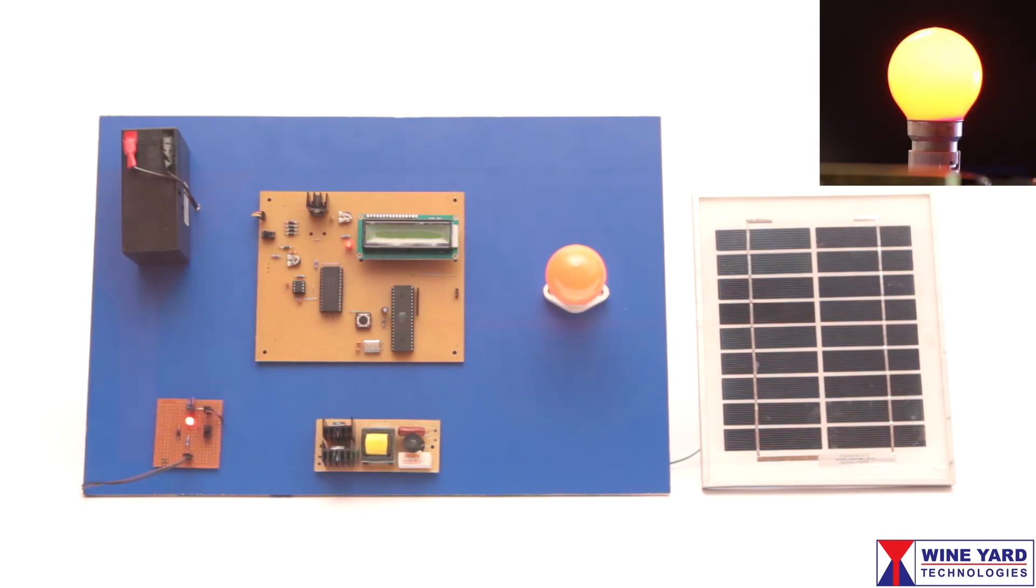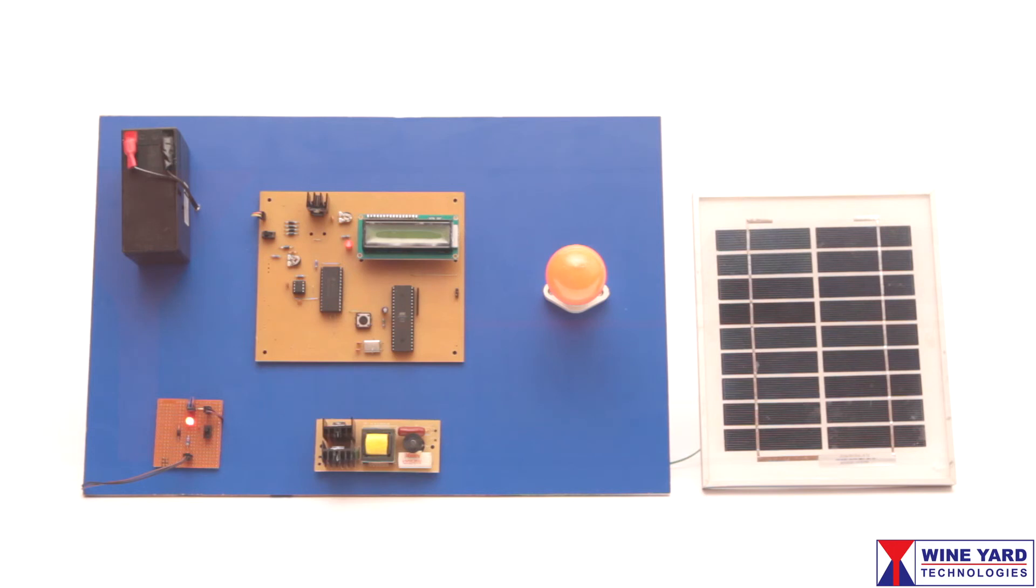A solar charge controller circuit can be used to avoid overcharging of the battery as a future extension of the project.